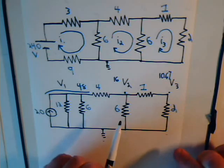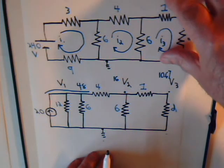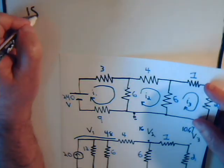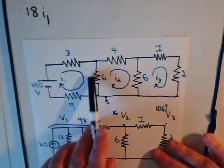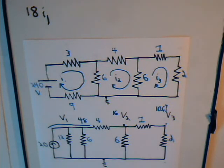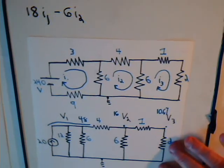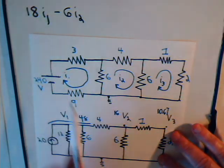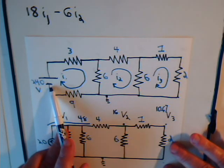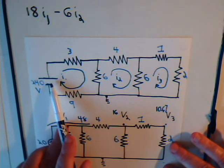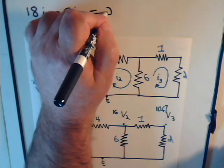For mesh current I1, we have 9 plus 9, which is 18, times I1. For the 6-ohm resistor, I1 goes down while I2 flows in the opposite direction, so we have minus 6 times I2. Since I1 is depicted as going into the battery — flowing from minus to positive — we indicate that positive voltage drop by writing it as a positive number on the right side of the equation.